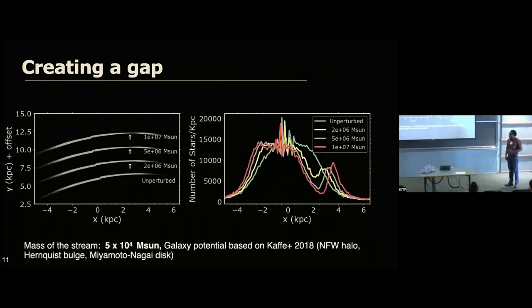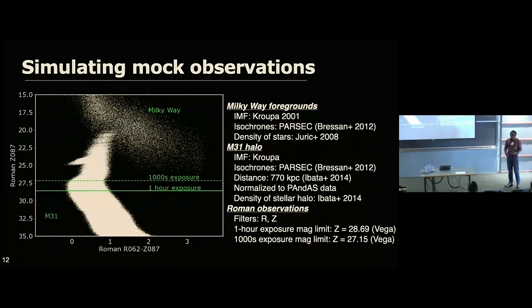So we did that. So we simulated a bunch of streams that are in an M31-like potential. Here we're using something like from Kafle 2018, which has like an NFW halo. We have a bulge in the disk as well. And then we are running a bunch of streams in there. So we have like a stream. This is all 50,000 solar mass, but it was perturbed. This one was perturbed by 10 to the 6 solar mass. This one was perturbed by 5 times 10 to the 6 solar mass. This one was perturbed by 10 to the 7 solar mass. You can see that the gap gets larger with the mass of the subhalo. And here I'm plotting the x-axis and then I'm just counting the number of stars per kiloparsec. And just another way to visualize that gap. So the gap is larger if you have a larger subhalo.